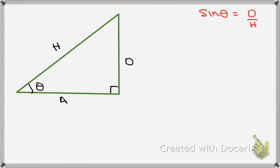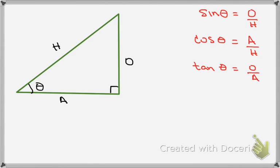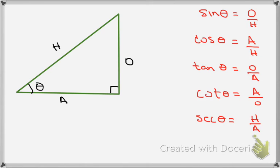From this, we know that sine theta is equal to the opposite over the hypotenuse. Cosine theta is equal to the adjacent over the hypotenuse. Tangent theta is equal to the opposite over adjacent, or sine theta over cosine theta. Cotangent theta is equal to the adjacent over opposite, or cosine theta over sine theta. Secant theta is equal to the hypotenuse over the adjacent side, which is one over cosine theta. And cosecant theta is equal to the hypotenuse over the opposite side, which is one over sine theta.